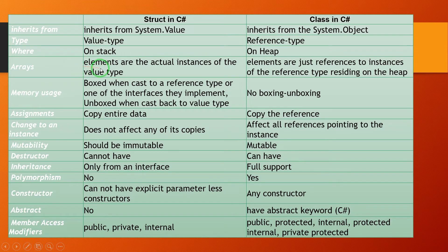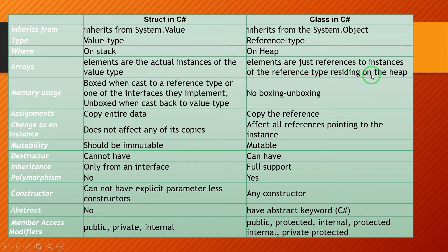In the case of arrays, array elements are the actual instances of the value type, whereas elements are just references to instances of the reference type residing on the heap.